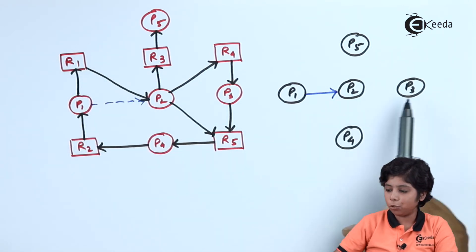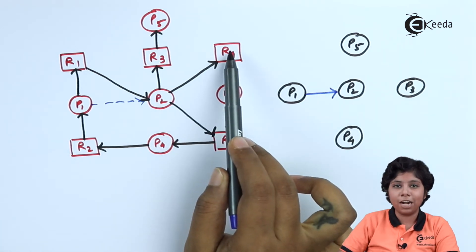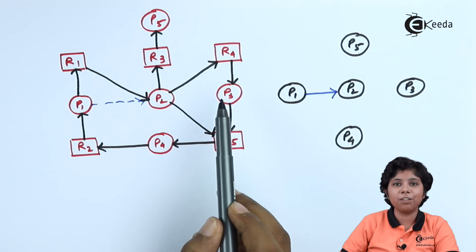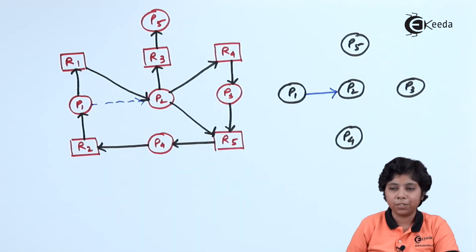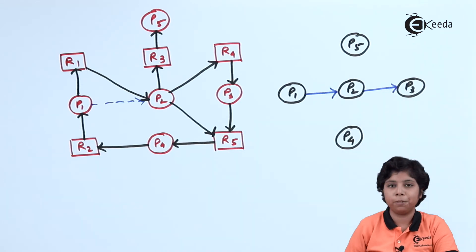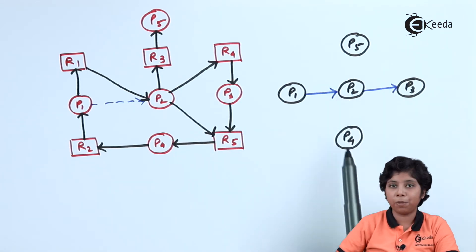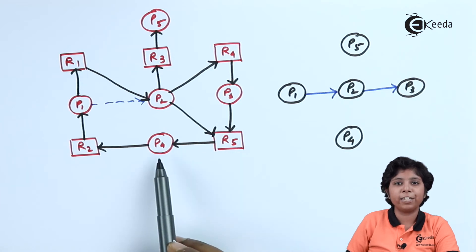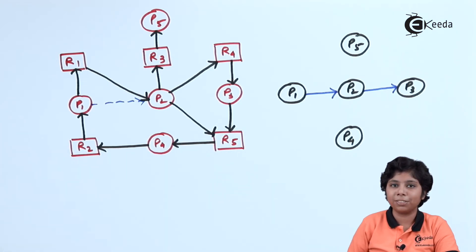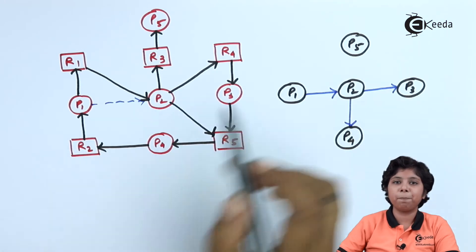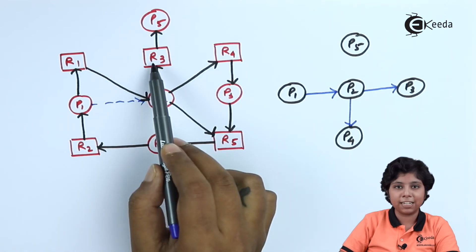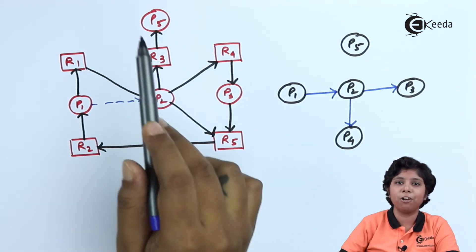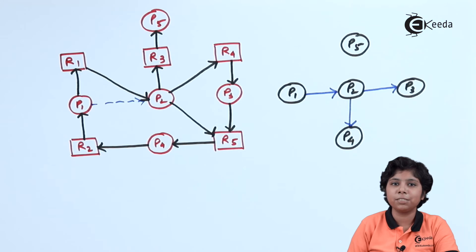Now considering P2 and P3: process P2 is requesting resource R4, which is allocated to process P3. So there will be an edge from P2 to P3. Next, P2 and P4: process P2 is requesting R5, which is allocated to process P4, so there exists an edge from P2 to P4. Finally, P2 and P5: process P2 is requesting R3, which is allocated to process P5, so there exists an edge from P2 to P5.